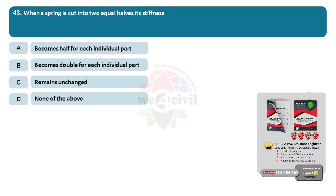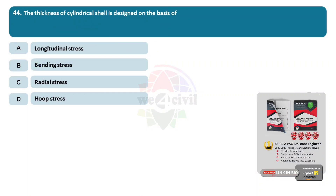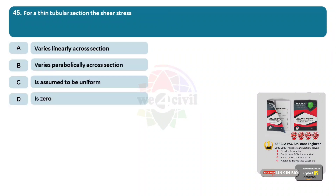Question 43: When a spring is cut into two equal halves, its stiffness? Options: A, becomes half for each individual part. B, becomes double for each individual part. C, remains unchanged. D, none of these. Answer: Option B, becomes double for each individual part. Question 44: The thickness of a cylindrical shell is designed on the basis of? Options: A, longitudinal stress. B, bending stress. C, radial stress. D, hoop stress. Answer: Option D, hoop stress. Question 45: For a thin tubular section, the shear stress. Options: A, varies linearly across section. B, varies parabolically across section. C, is assumed to be uniform. D, is 0. Answer: Option C, is assumed to be uniform.